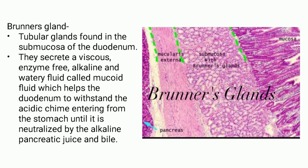The other intestinal gland is Brunner's gland, a tubular gland found in the submucosa of the duodenum. It secretes a viscous, alkaline, watery fluid called mucoid fluid, which helps the duodenum withstand the acidic chyme entering from the stomach until it is neutralized by the alkaline pancreatic juice and bile.